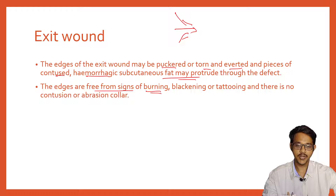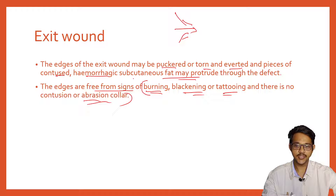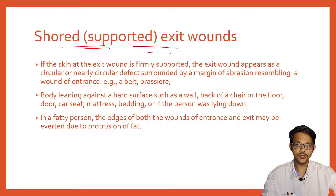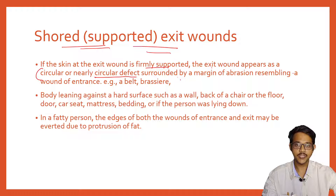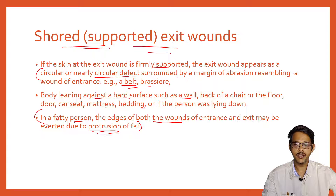The edges of the exit wound are free from signs of burning, blackening, tattooing, and there is no abrasion collar — all typical features of entrance wounds are absent. Supported exit wounds are those where the skin is in close contact with a hard object; in such cases the exit wound appears as a circular or near-circular defect, caused by the supporting surface such as a belt, brassiere, wall, chair, floor, or car seat. In obese persons, both entrance and exit wounds may appear everted due to protrusion of fat.